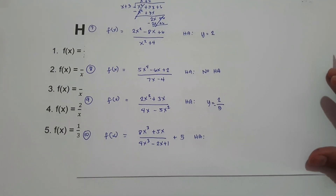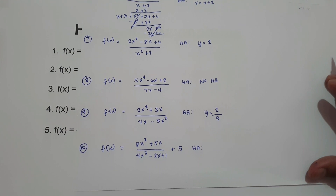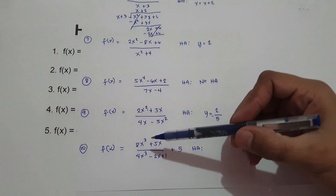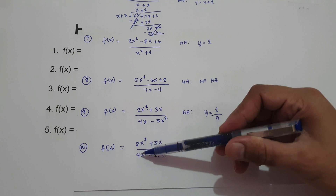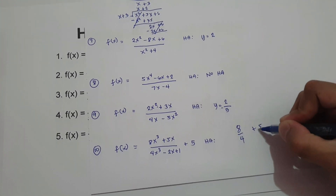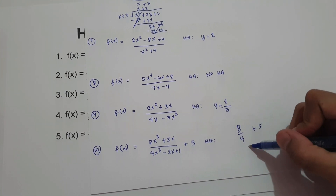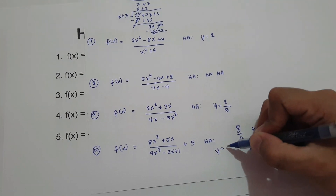What about number 10? f of x equals 8x cubed plus 5x all over 4x cubed minus 2x plus 1, plus 5. We have the same degree of exponent on the numerator and denominator, so we simply get the leading coefficients: 8 over 4, then add 5. 8 divided by 4 is 2, plus 5 — our horizontal asymptote is 7.